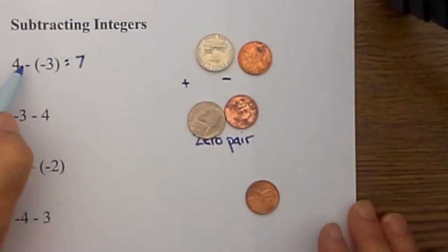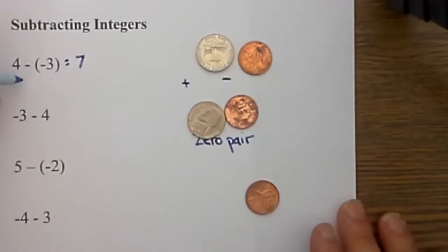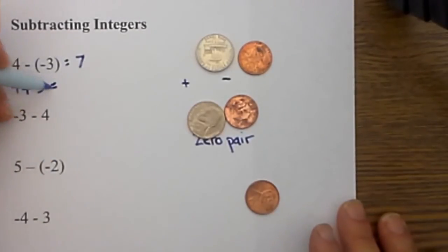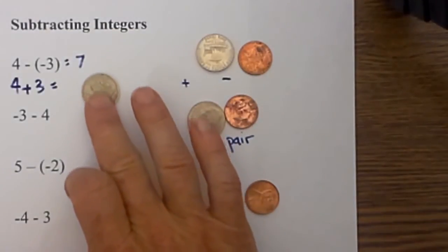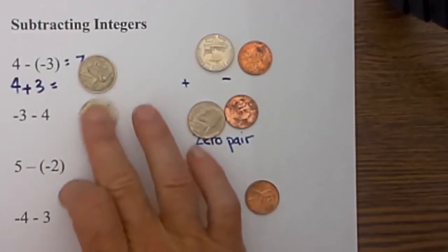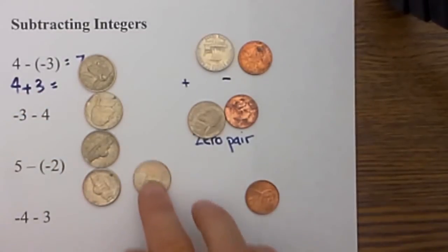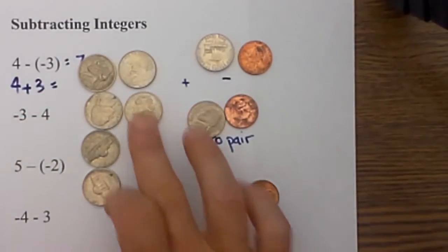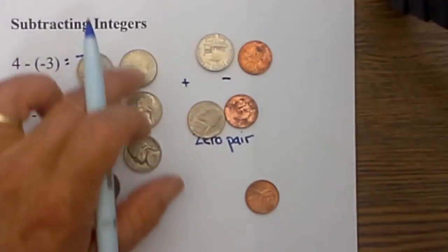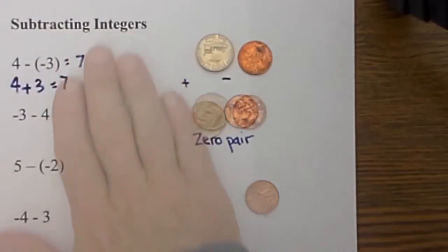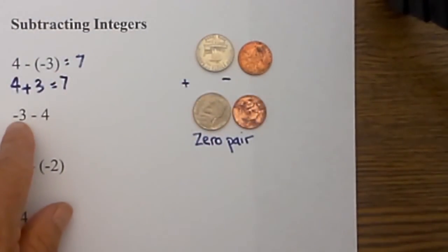The method that I prefer — but you can use either one — is when you are subtracting a negative number, you change the sign to positive and then change the sign of the number directly behind the subtraction sign to the opposite. So now I will put down four positive counters and then three more positive, and you will see I now have a grand total of seven positive numbers. So you get the same answer.